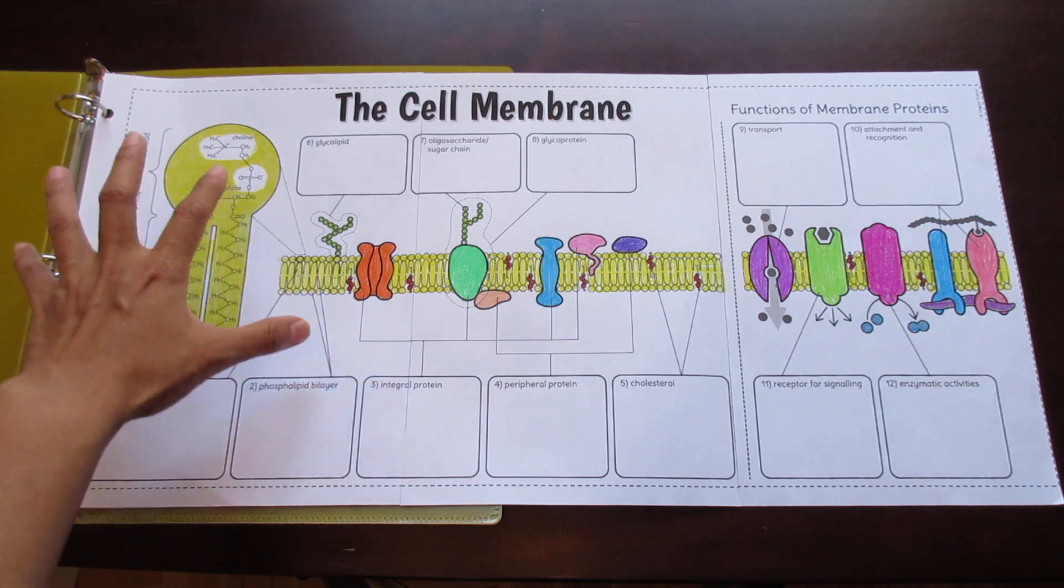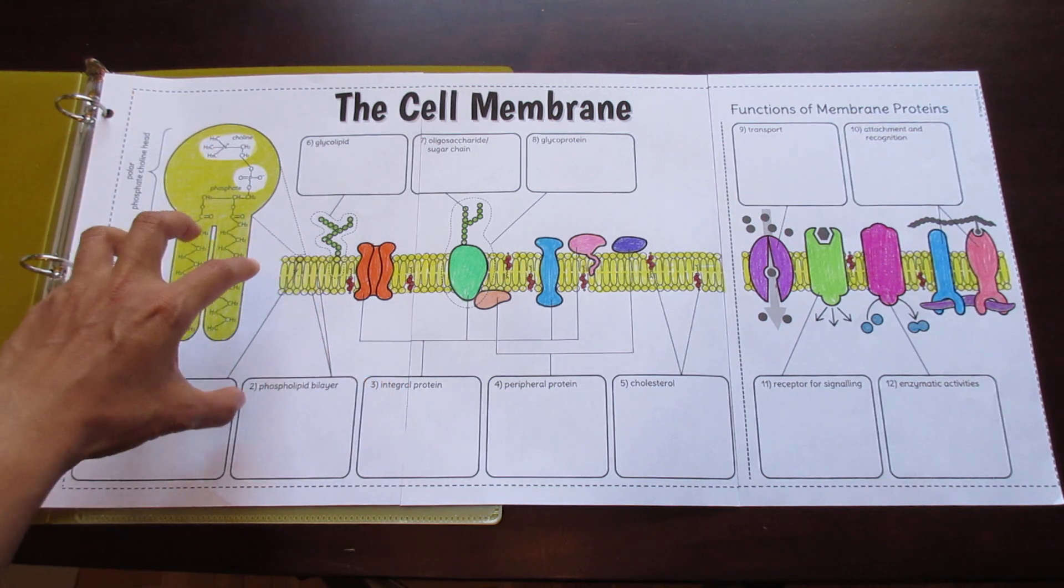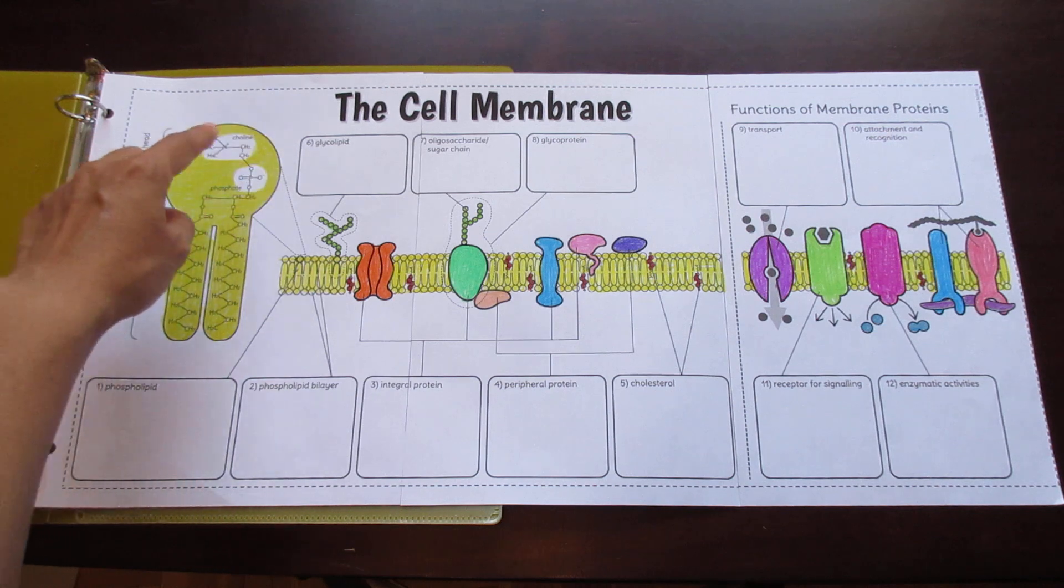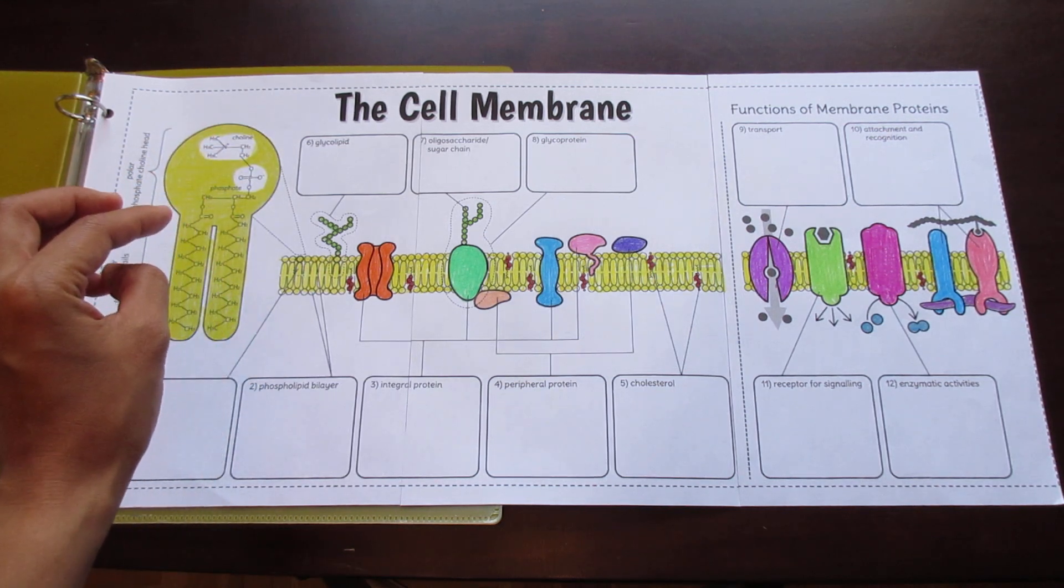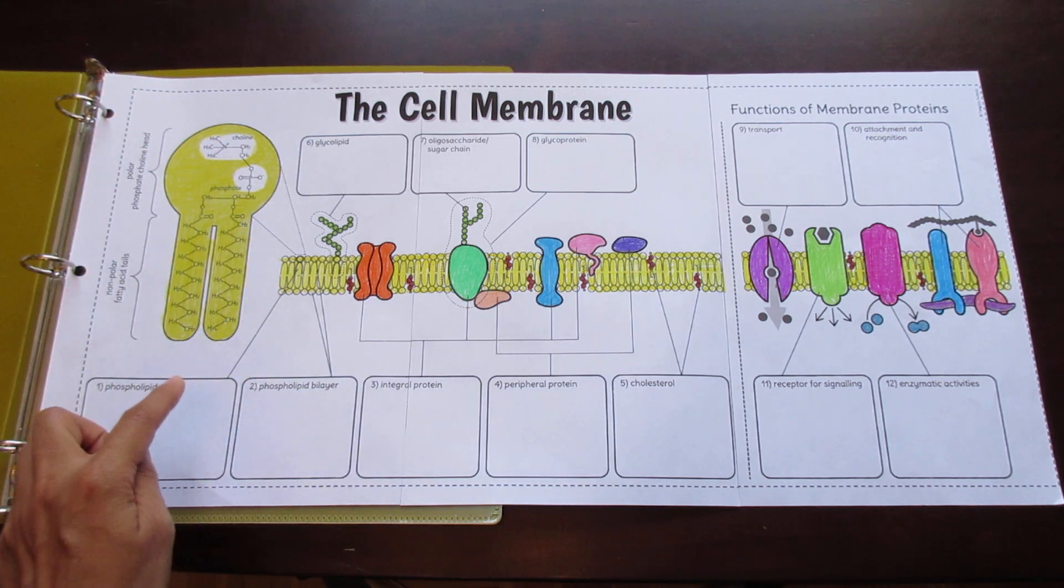Some interesting features are if you go to the left-hand side, you see that for one of the phospholipids, I've actually blown it up and shown you a larger diagram showing the nonpolar fatty acid tails and the polar phosphate choline head. So when you want to talk about the specific biochemical nature of the phospholipid, you can do that there, and you can write the description for that here.